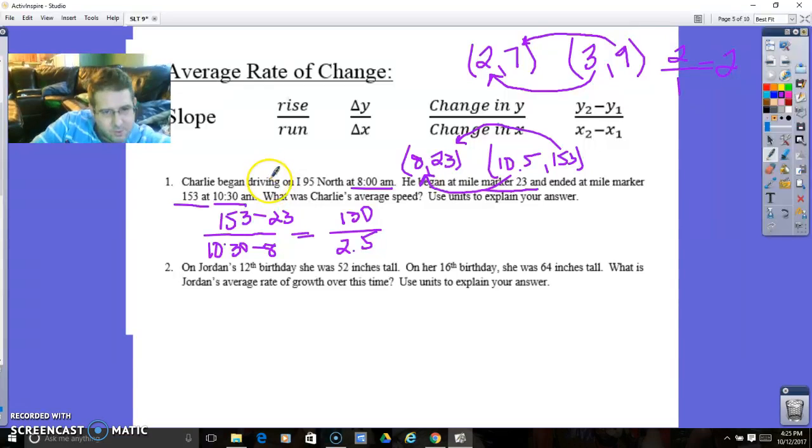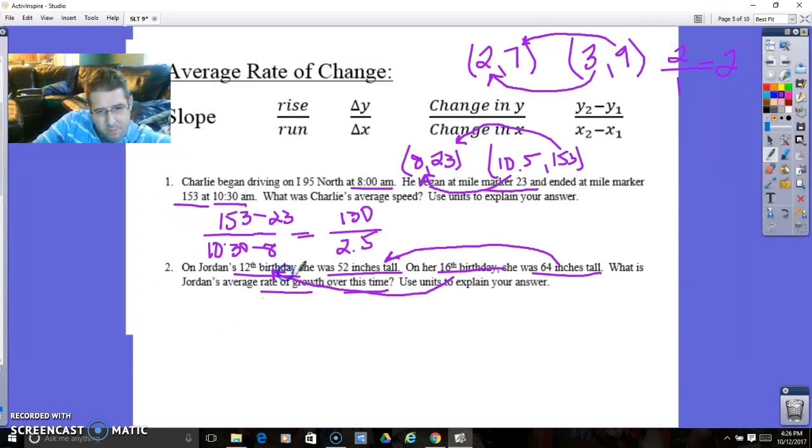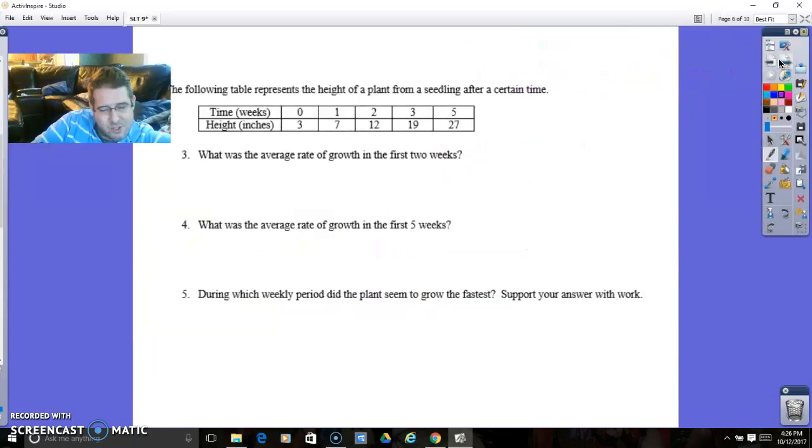So average rate of speed. Jordan's 12th birthday he was 52 inches tall. 16th birthday was 64 inches tall. What was the average growth over time? That's growth on top, time on bottom. So that's 64 minus 52 on top, 16 minus 12 on bottom. 64 minus 52 gives you 12, and 16 minus 12 makes 4. 12 divided by 4 is 3. 3 inches per year.